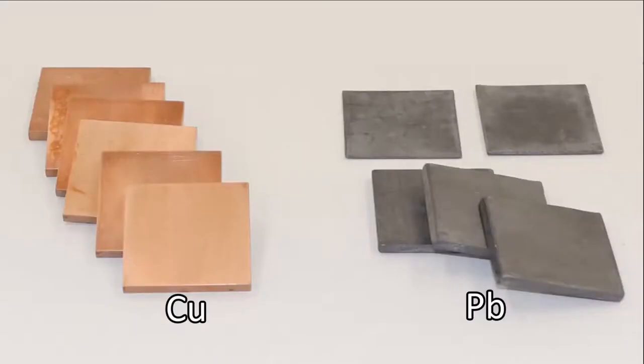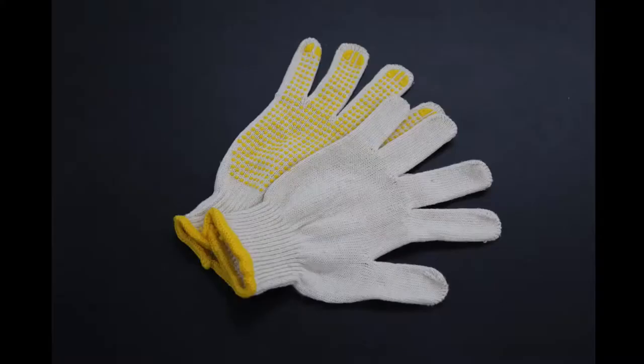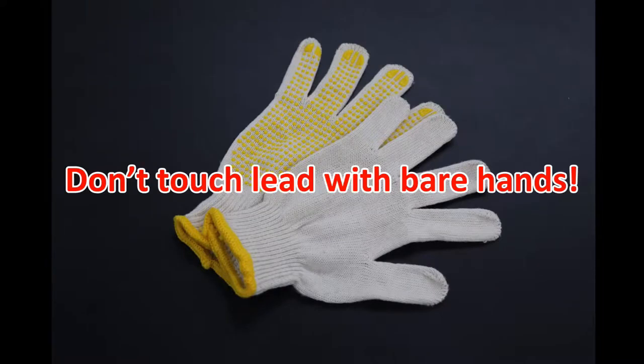Absorber plate to absorb gamma rays. There are two types, copper and lead. Put on gloves when you handle lead. Be careful not to touch the lead with bare hands.